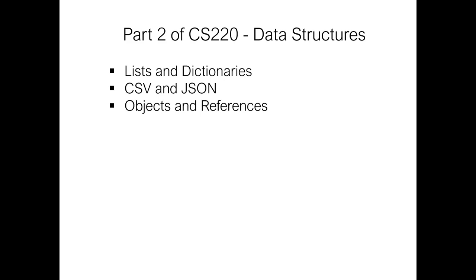Then we moved on and talked about objects and references. This is conceptually one of the more difficult topics, but understanding how lists work is going to help you debug your code. Missing the fact that when I say X equals Y, X is now referring to the same thing that Y does, can lead to some really subtle errors that may return an answer but may be the wrong answer. You may be changing a variable that actually changes another variable too. It's going to be a major focus of our exam.